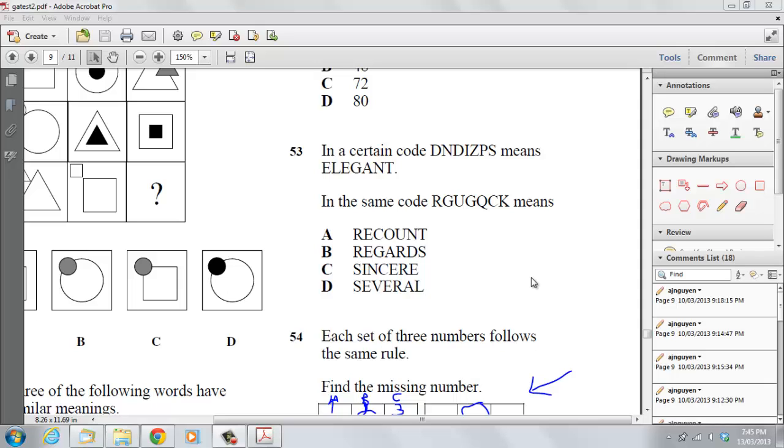Question 3 says in a certain code DNDIZPS means elegant. In the same code RGUGQCK means: A recount, B regards, C sincere, D several.